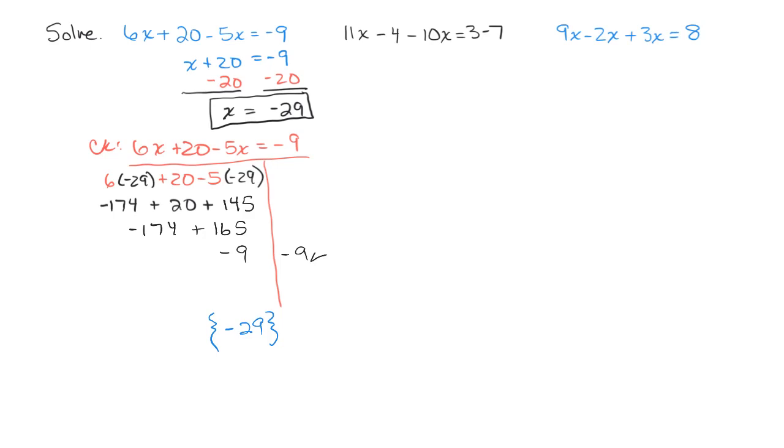So let's do the second one here. Again, I need to simplify both sides of the equation first. And for this particular problem, both sides do need to be simplified. So I have an 11x minus 4 minus 10x. I can combine the like terms 11x and negative 10x, and that will be 1x, which is x minus 4.